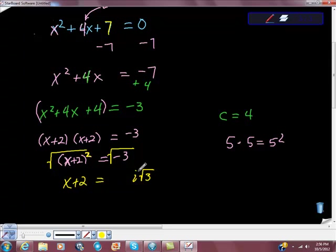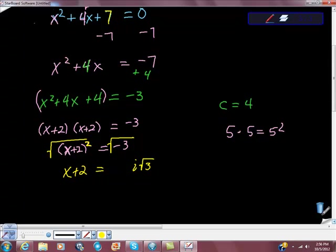And if that i is bothering you, then we need to talk about complex numbers, but this is not the time to do that. Now what I'm going to do is just get to x by adding negative 2 to both sides, negative 2.